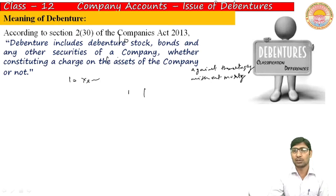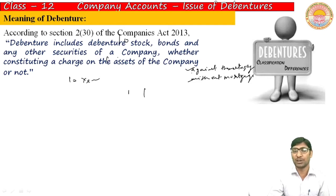In the context of security: debentures can be issued with security, meaning the company's assets are used as collateral. In case of default, if the company delays principal or interest payment, the debenture holder can claim against the company's assets, sell them, and realize the amount.